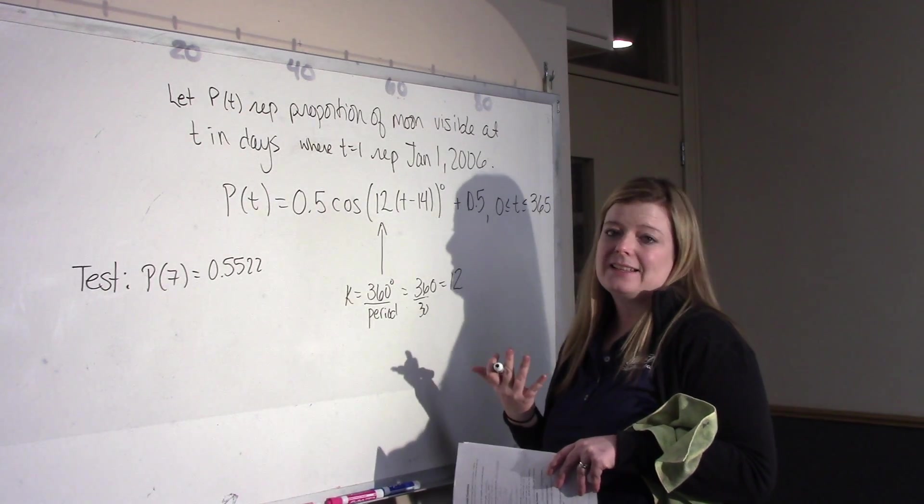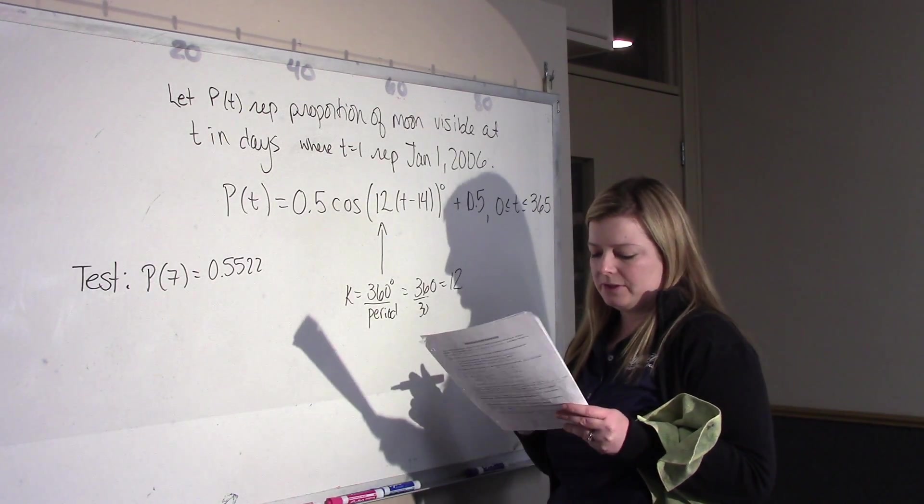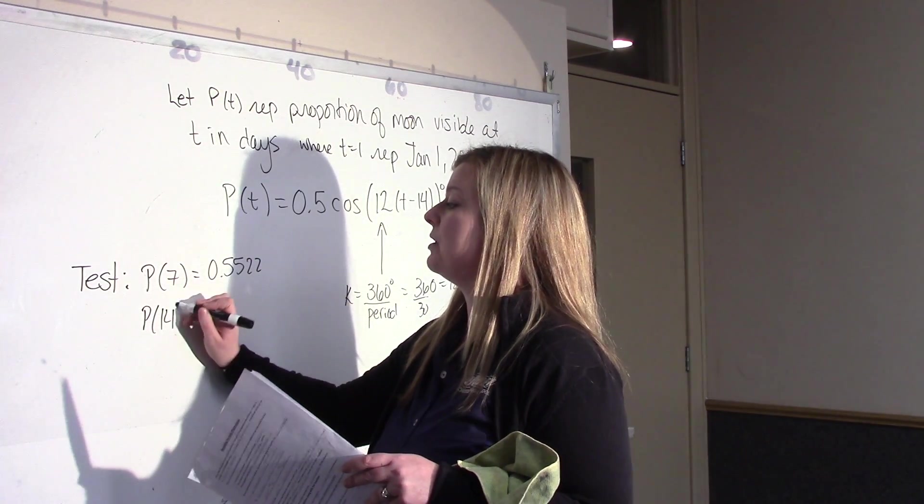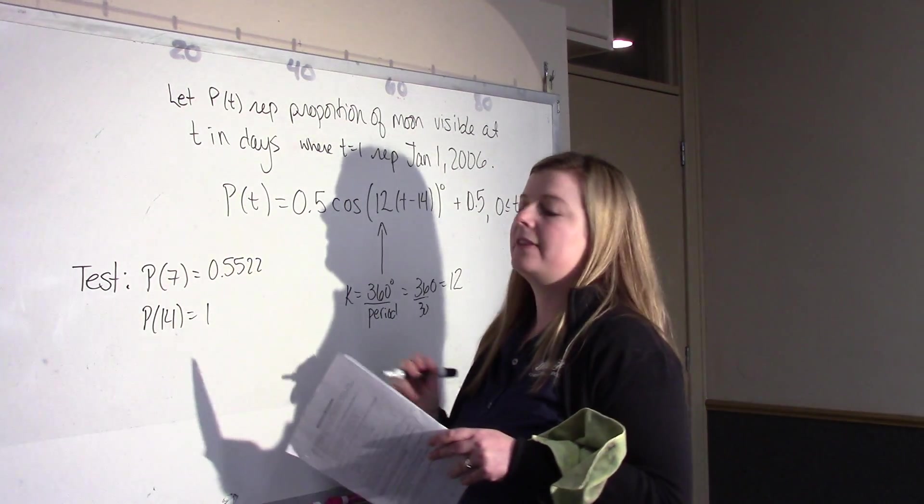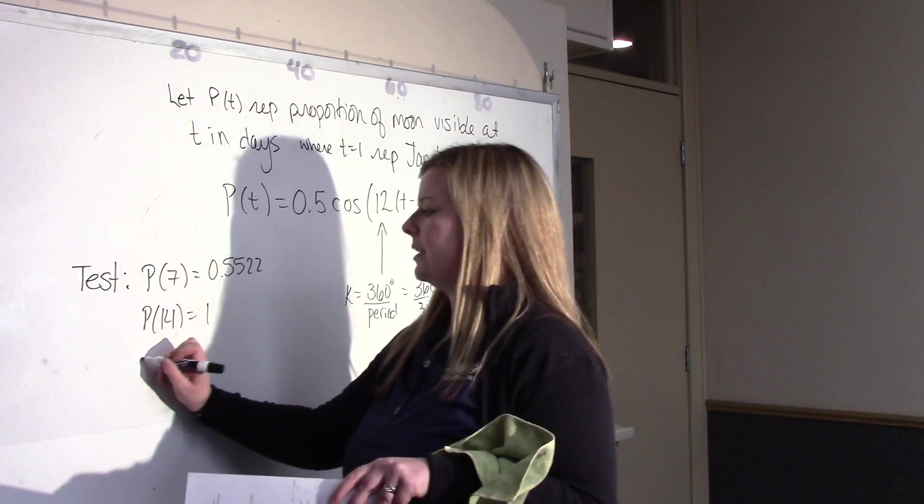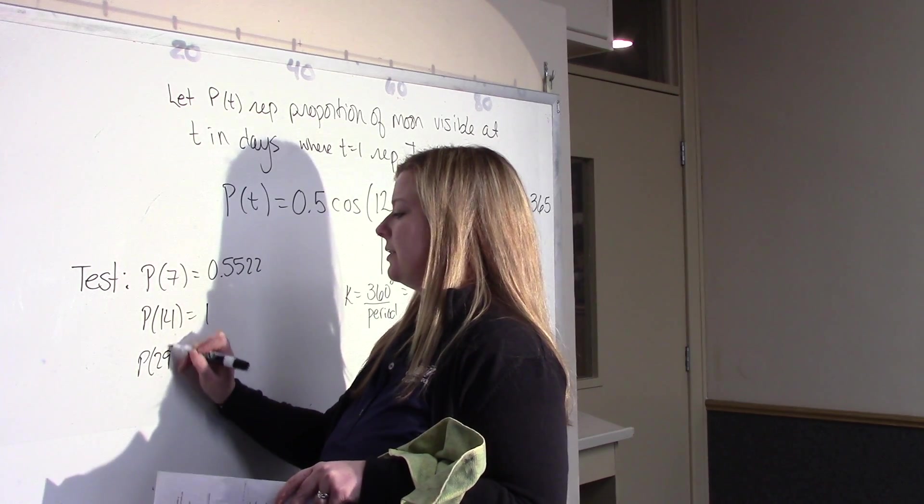The data doesn't fit exactly a sinusoidal curve. It's just really, really close to it. Now, if we put P at 14, we get 1, and we should because we based the function, the model, off of that point. If you put it in P at 29, you do get 0. So, that's good news.